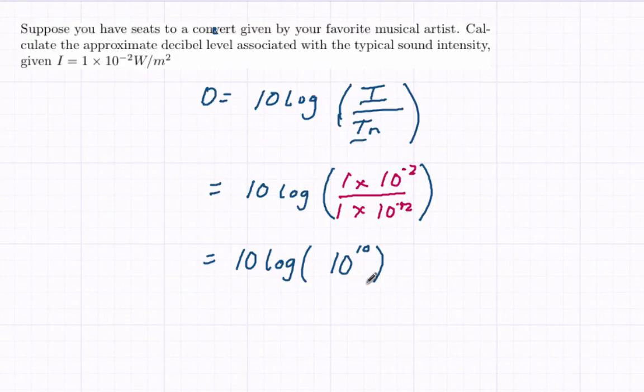We have a log base 10 here of 10. So using our properties of logarithms, this is going to simplify to be 10 times 10. The base is 10, it'll simplify with this, and we're just left with that 10 here. So 10 times 10 is 100.